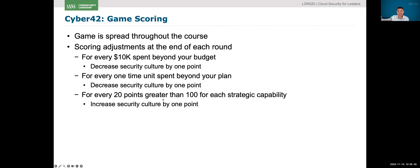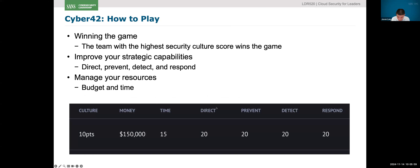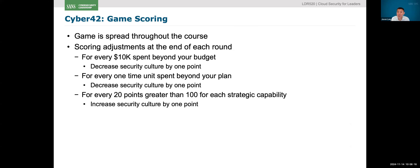It's not all punishing — if you earn over 120 points for each of those strategic capabilities — direct, prevent, detect, and respond — then it will accumulate one more culture point back to your score. So that's basically how we're going to play the game. There are a lot of different factors, and we only have three stages in this shorter summarized version of the game, but it should still be very exciting.